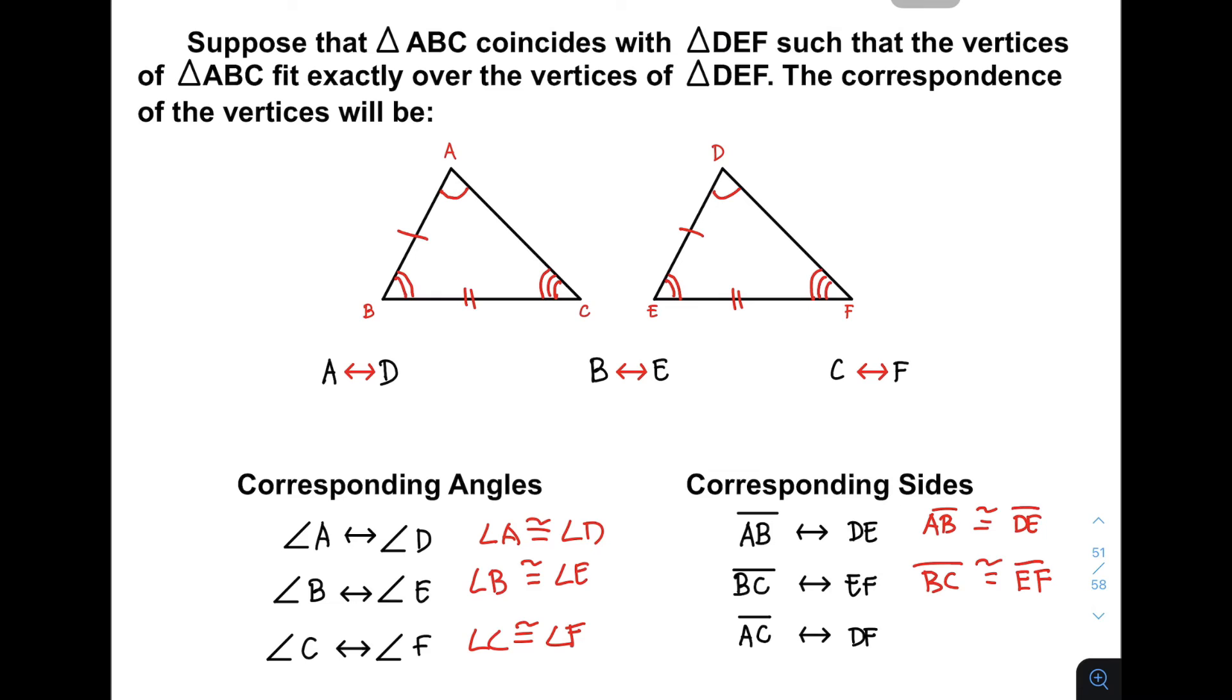Lastly, if your AC, side AC corresponds to DF, this is your AC and this is your DF, we will be using these three markings. If they have three markings, you can say or you can declare that AC or side AC is congruent to side DF.